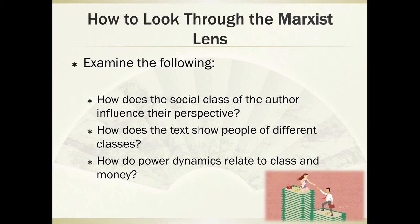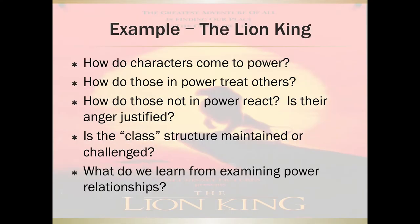When looking through the Marxist lens, we examine the social class of the author — where are they writing from, and were they poor themselves? Might that shape their worldview and how they write? We also look at how the text shows people of different classes: does it praise the upper one percent, or is it critical of them? Does it praise those who are struggling, or does it point a finger? How do power dynamics relate to class and money, within the text and from the author? For the Lion King: how do characters come to power — hereditary, or by seizing it as Scar does? How do those in power treat others? Is the class structure maintained or challenged? What can we learn from the power relationships in this text?